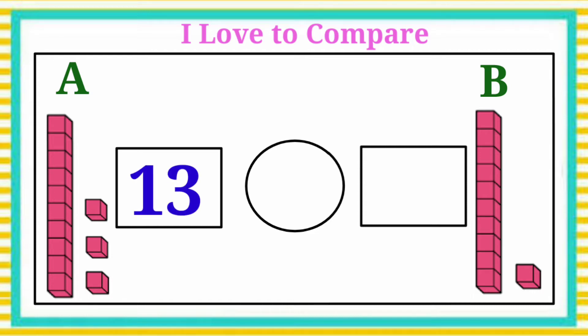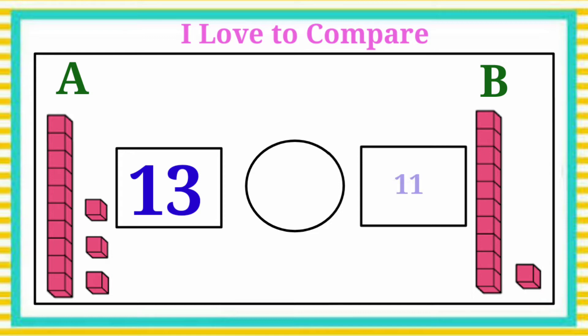Next, count Group B. This is one group of ten blocks and count others. Ten, after eleven. Group B has eleven blocks. Write the number eleven in the box.